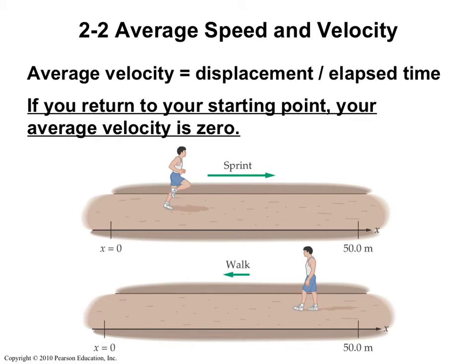So speed and velocity are really different. We often use them interchangeably, but their definitions in physics are vastly different. My average velocity is my displacement divided by time. In some situations, displacement and distance are the same, other situations where they are different.